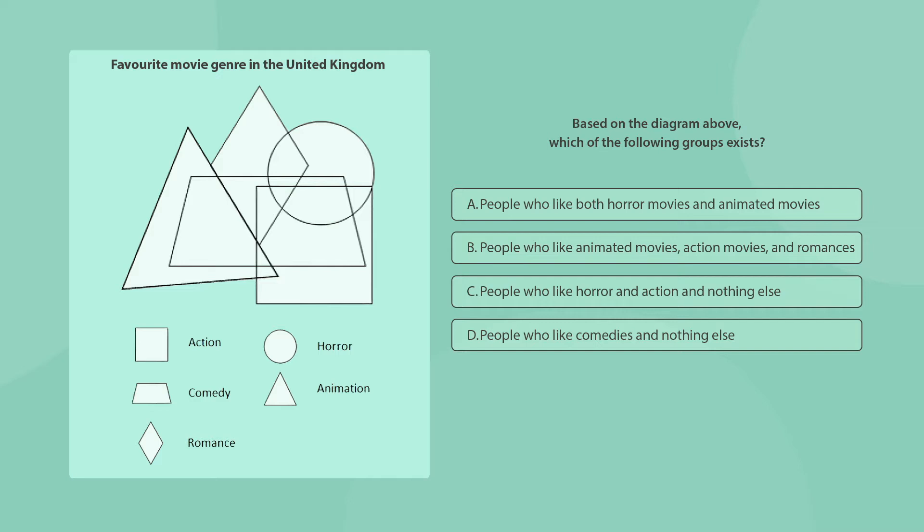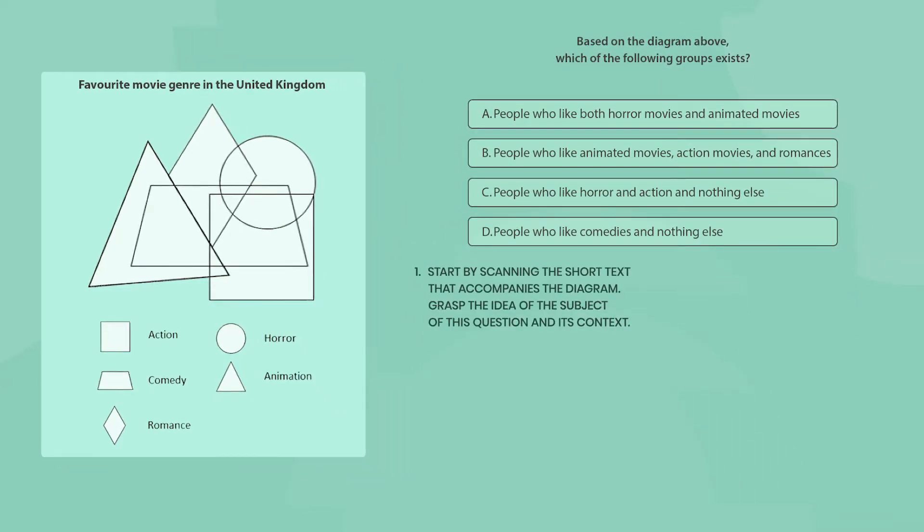While practicing this type of questions, try to follow these steps. 1. Start by scanning the short text that accompanies the diagram. Grasp the subject of the question and its context. 2. Skip the diagram and its legend and read the question instead.